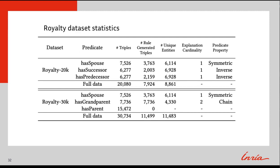This table gives a breakdown of the royalty datasets. We can see the predicate, the number of triples with that predicate, and the number of unique entities. The explanation cardinality denotes the number of triples in the explanation, and the predicate property describes the explanation structure.